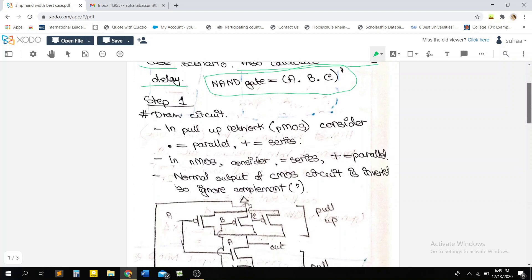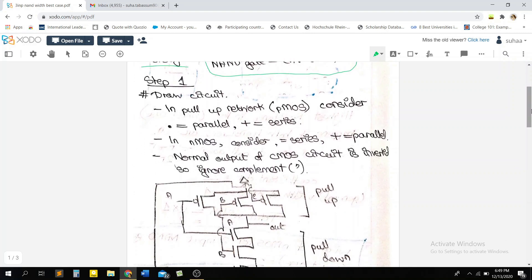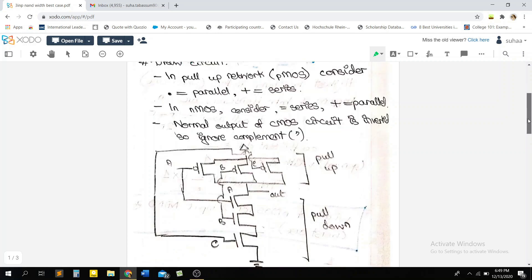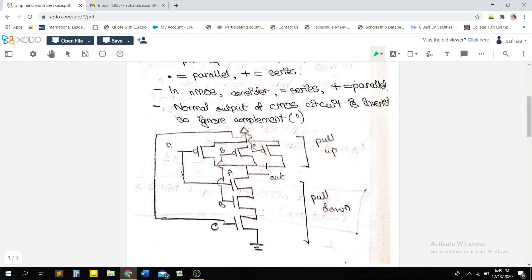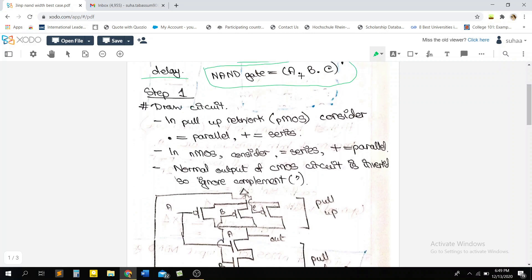And as I discussed before, in a CMOS circuit, when you're considering the pull up network, which is basically the PMOS part, the dot in your Boolean expression is going to mean parallel connection. And if there is a plus in your Boolean expression, it's going to mean a series expression.